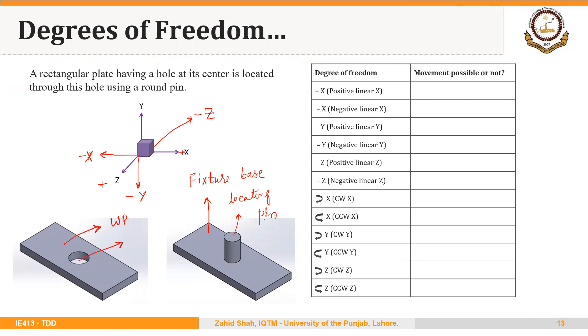we were locating the part through externally machined surfaces. Here, we are locating the part through a hole, and the locating device is a cylindrical pin in this case.